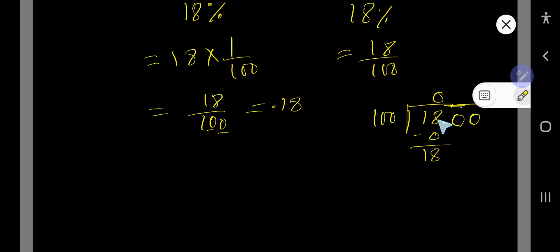So now bring down the first 0. But before 0 we have decimal, so decimal will come directly to the quotient. So 100 goes into 180 how many times? 1 time.